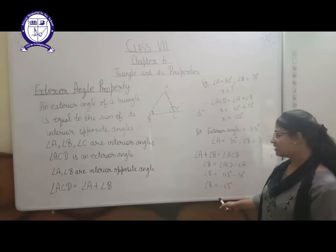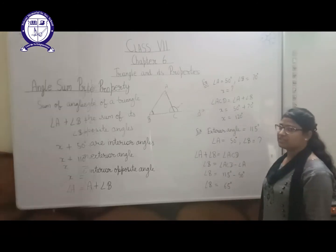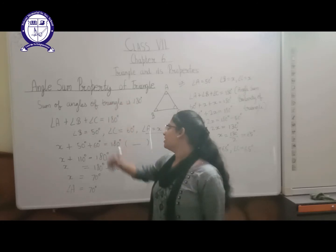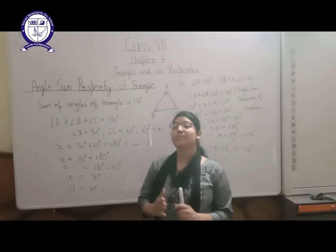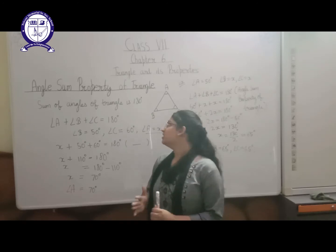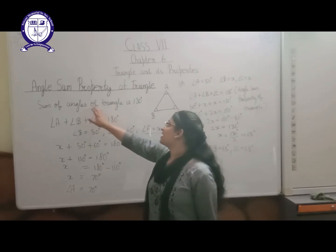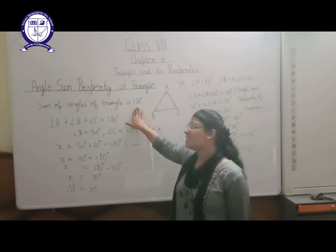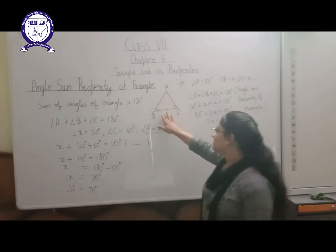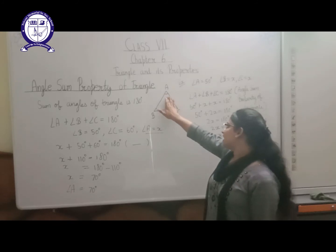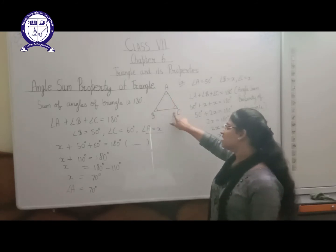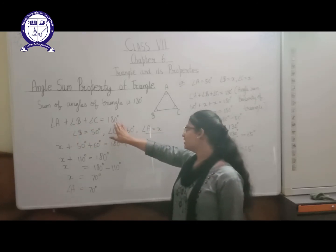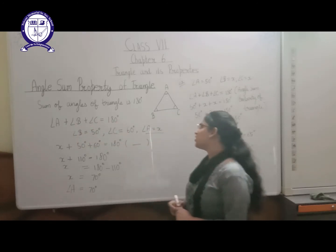Our next topic is the angle sum property of a triangle. The sum of the angles of a triangle is always 180 degrees. Here ABC is a triangle with angle A, angle B, and angle C. So angle A plus angle B plus angle C equals 180 degrees.